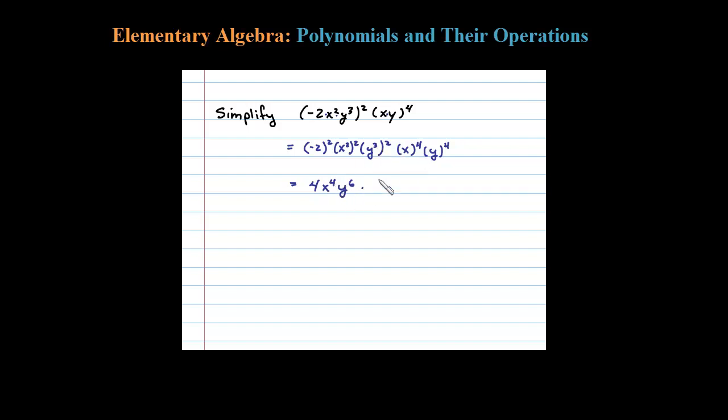Times here we have an x to the fourth and a y to the fourth. When we multiply two terms with the same base, we add exponents. So when I multiply here, x to the fourth times x to the fourth.